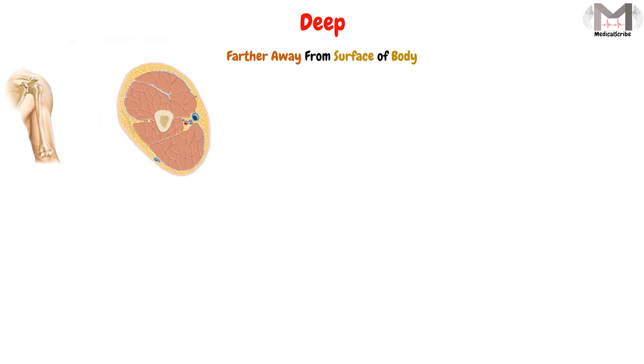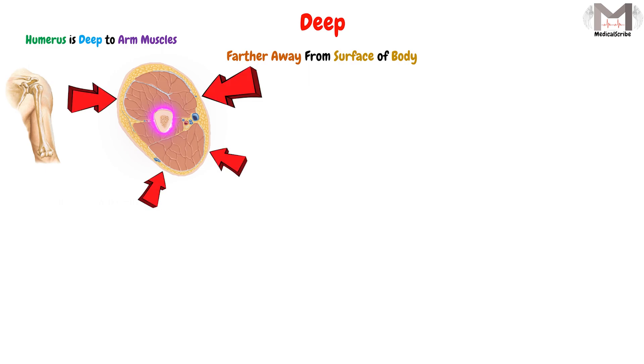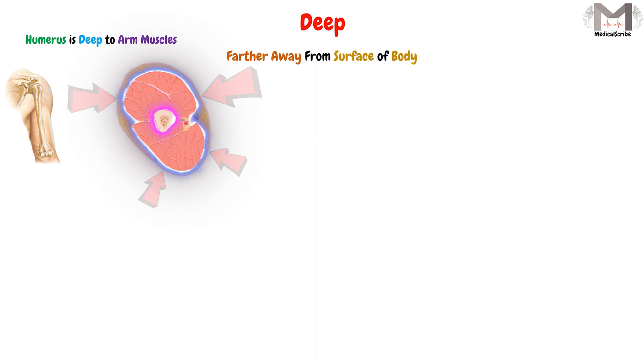Deep means the structure that is farther away from the surface of the body, also in comparison with another structure. So if we return to our cross section of the arm and say the humerus is deep to the arm muscles, that means the humerus bone is deeper or farther away from the body surface than the arm muscles, because the humerus is deep and located in the center of the section.